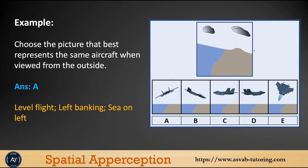Let's do another practice. You can see the horizon is inclined to the right, so the best answer is letter A. The horizon is in the middle, which means it is level flight, and also making a left turn.